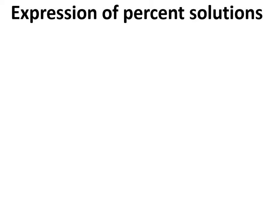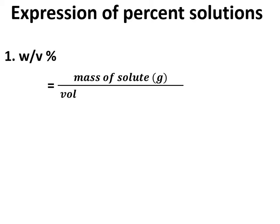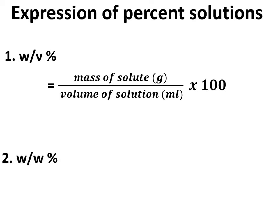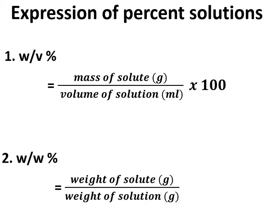Let's see the expressions of percent solution we will use to prepare both of these solutions. For weight by volume percent solution, the expression is: mass of solute in grams divided by volume of solution in mL, multiplied by 100. For weight by weight percent solution, the equation uses weight of solute in grams divided by weight of solution in grams, multiplied by 100. The difference is that in the first expression the solution is measured in mL, and in the second expression the solution is measured in grams.